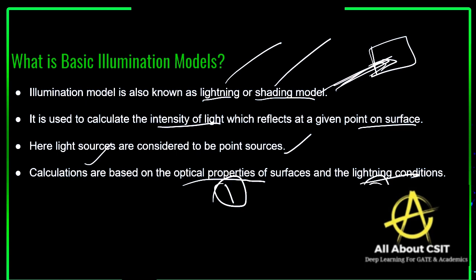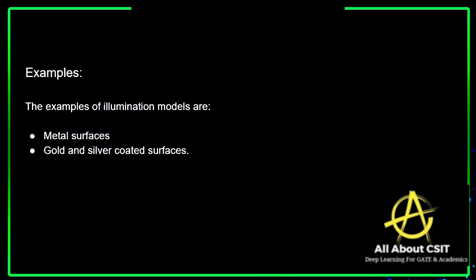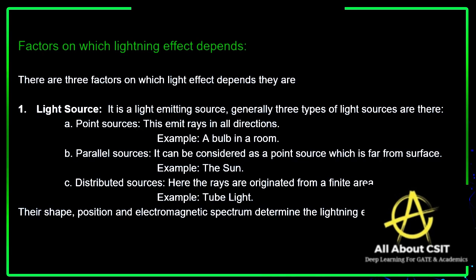Now let's see the examples of the illumination model. The examples of illumination models are metal surfaces and gold and silver coated surfaces. The light that reflects on metal surfaces is different, and the illumination on gold and silver coated surfaces is also different — everything is based on the surface.